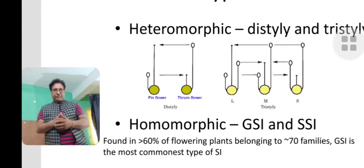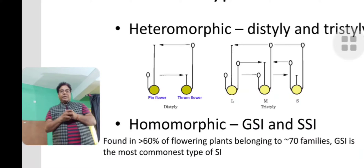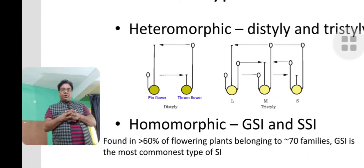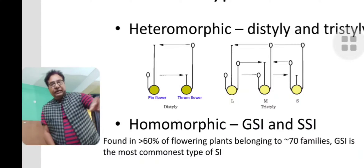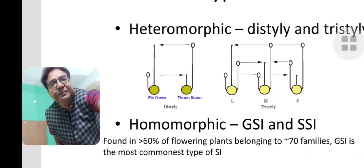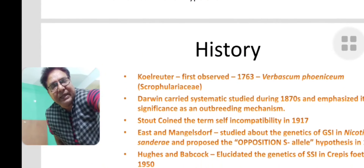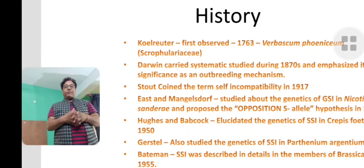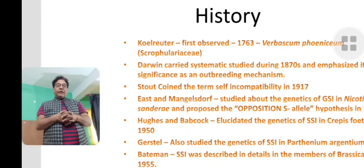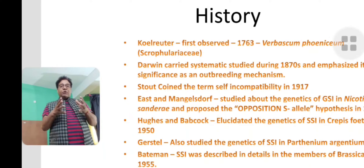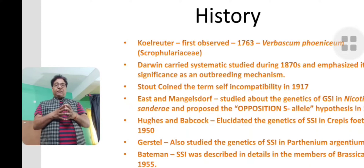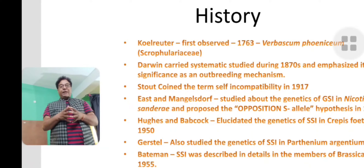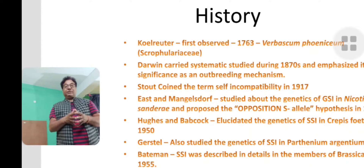In case of homomorphic self-incompatibility, as mentioned, more than 60 percent of flowering plants belong to this category, falling in 70 percent of families. There are two types: GSI and SSI — that is, gametophytic self-incompatibility and sporophytic self-incompatibility. Historically, it was Reuter who first observed this phenomenon in Barbascum phoenicium from the Scrophulariaceae family, way back in 1763.